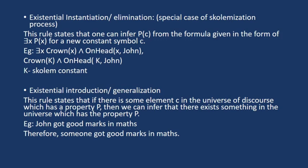Now the fourth rule is existential introduction or generalization. This rule states that if there is some element c in the universe of discourse which has the property P, then we can easily infer that there exists something in the universe which also has the property P.